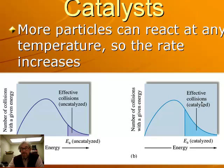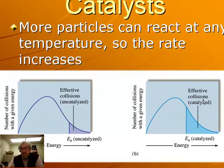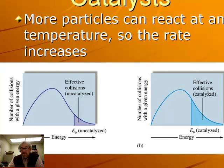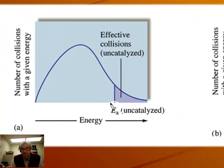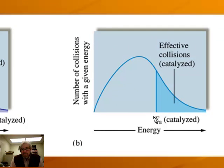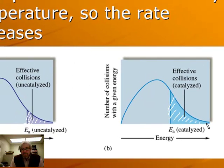On a frequency diagram, the particle energy profiles are identical at the same temperature. The difference is where the EA cutoff falls. In the uncatalyzed reaction, EA is high and only a few particles qualify. With a catalyst lowering EA, a much larger area under the curve represents particles with enough kinetic energy to react, so the rate increases significantly.